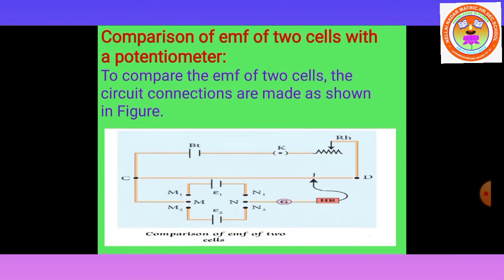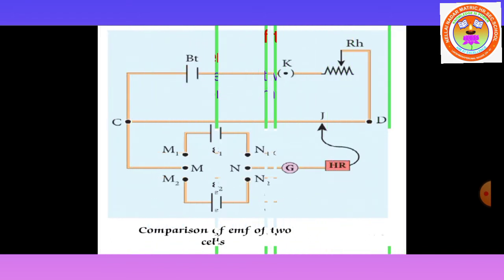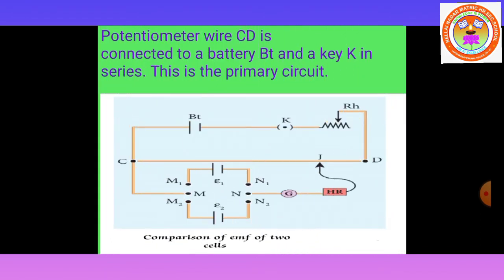Next: comparison of electromotive force of two cells with a potentiometer. To compare the electromotive forces of two cells, the circuit connection is shown in the figure. CD is the potentiometer wire connected with a battery, key, and rheostat in series — this is the primary circuit.